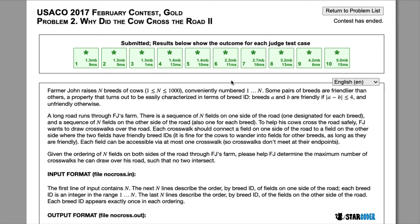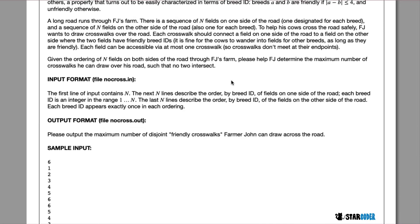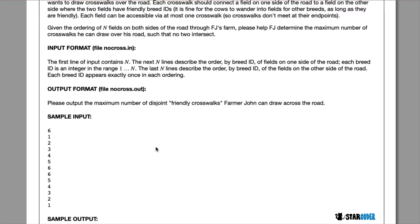These breeds have different friendliness levels and we can only have two crosswalks cross if the two cow breeds are friendly. We want to find the maximum amount of friendly crosswalks that he can draw across the road.